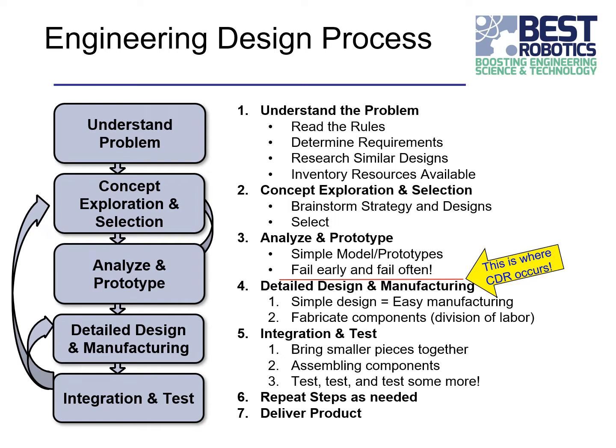Then you move to the next step: exploration of the concepts of what the robot should be able to do and the choice of what design you'd like to pursue. During this step, you do a lot of brainstorming with your team. You discuss the strategy — how do we want to score? If we want to score those points, what does our robot design look like? If we want to score some other points, what would that robot design potentially look like? And then you narrow down what looks like a good approach to pursue in your robot design.